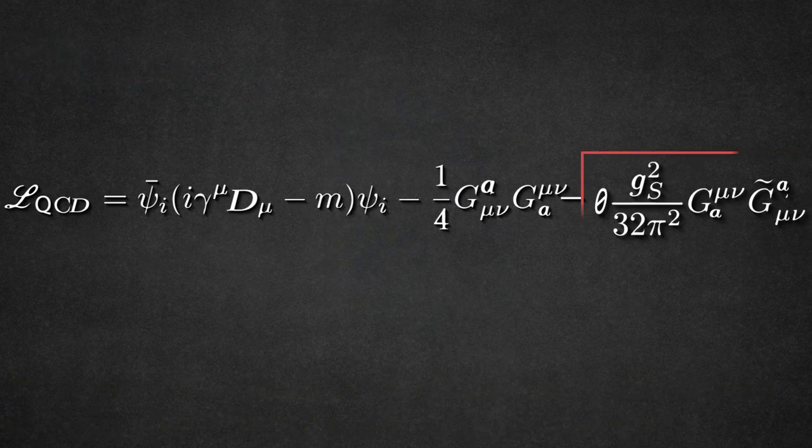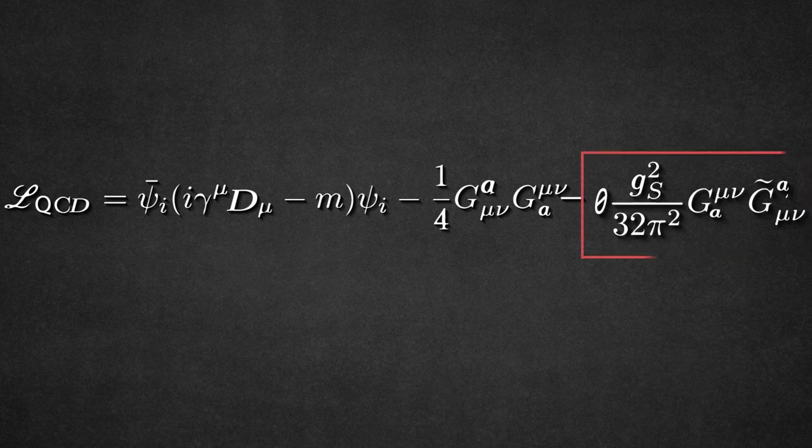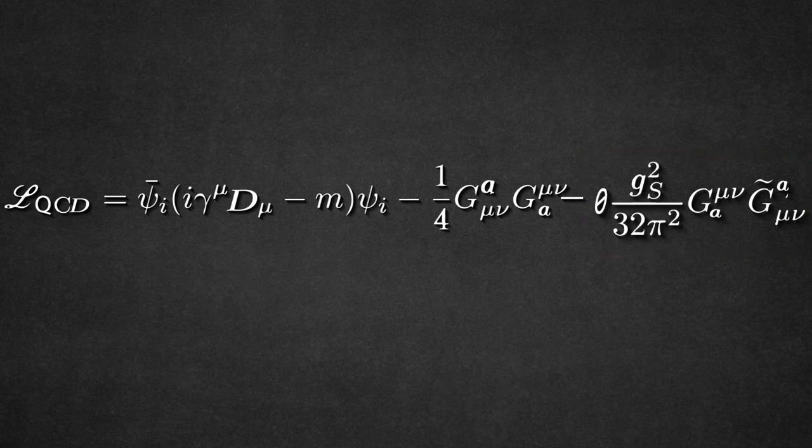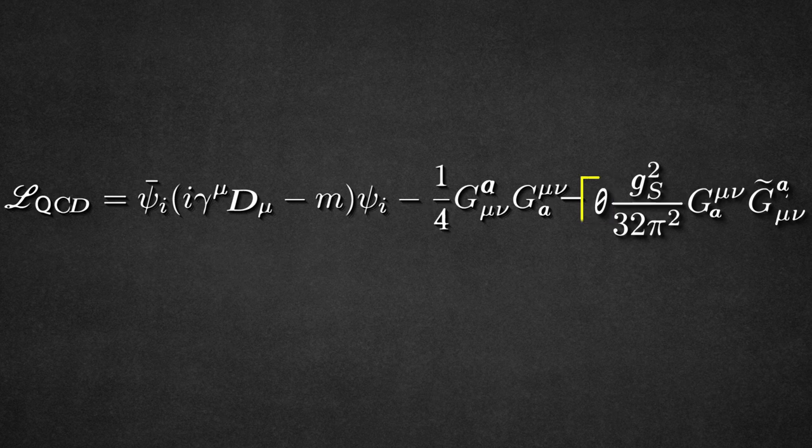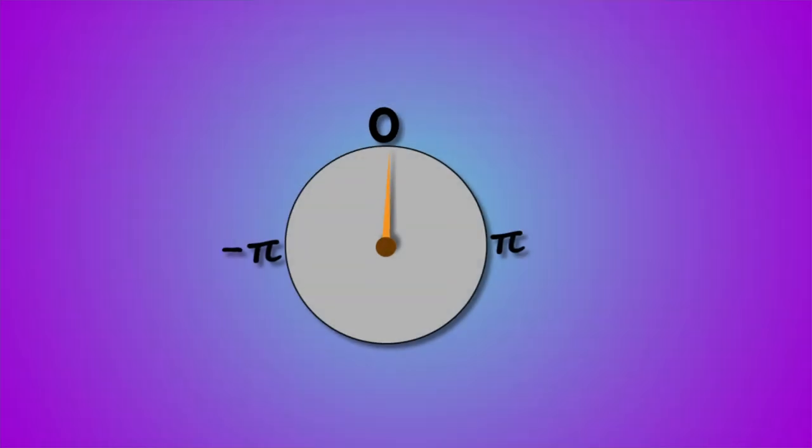To solve this, a new theta term was added to the equation of quantum chromodynamics, but even then the result was the same. This occurred because the new variable theta took a value of zero when it could take any value between pi and minus pi, which is extremely improbable.